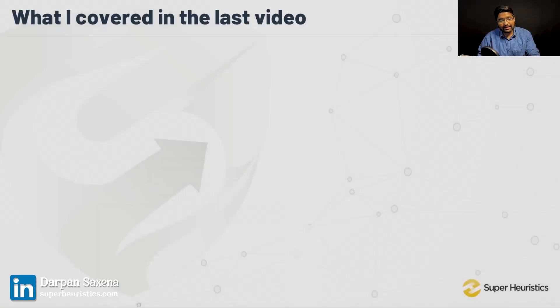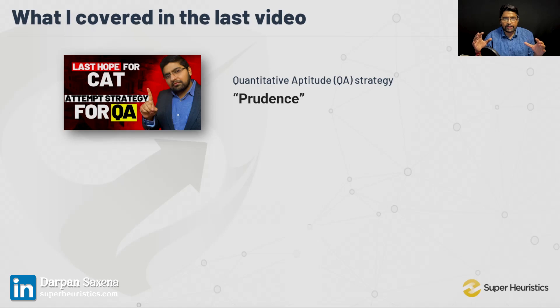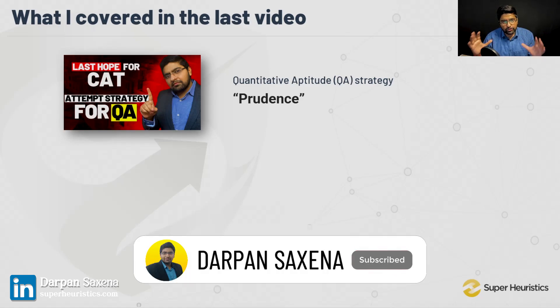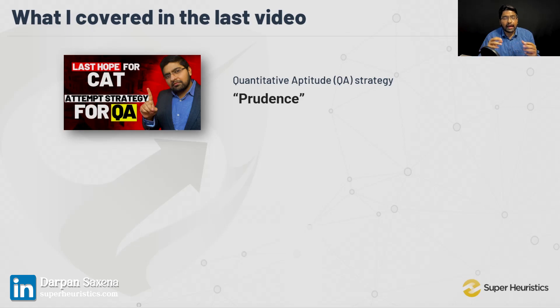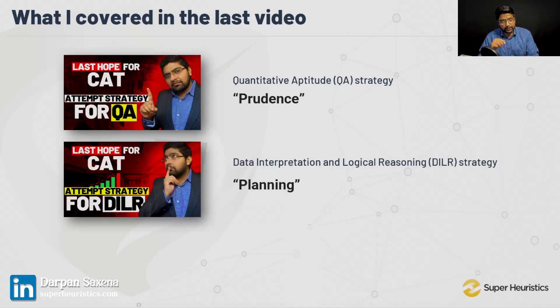I hope you would have watched my last video on QA — what should be your attempt strategy for QA — where I effectively said that your QA strategy is about prudence: choosing your questions correctly and attempting them. Even as you encounter questions in QA, you need to be prudent about which ones to attempt now and which ones later. However, DILR is all about planning — specifically, planning for momentum.